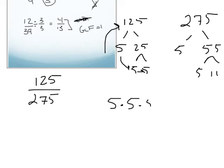Which is essentially the product of all of the prime factors. So 5 times 5 times 5 is equal to 125, and then 5 times 5 times 11 is equal to 275.